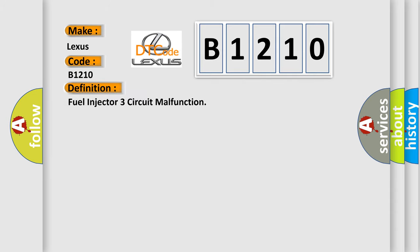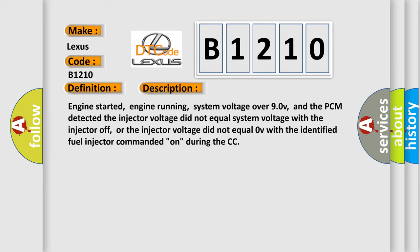The basic definition is Fuel injector three circuit malfunction. And now this is a short description of this DTC code: Engine started, engine running, system voltage over 90V, and the PCM detected the injector voltage did not equal system voltage with the injector off, or the injector voltage did not equal 0V with the identified fuel injector commanded on during the continuous monitor.